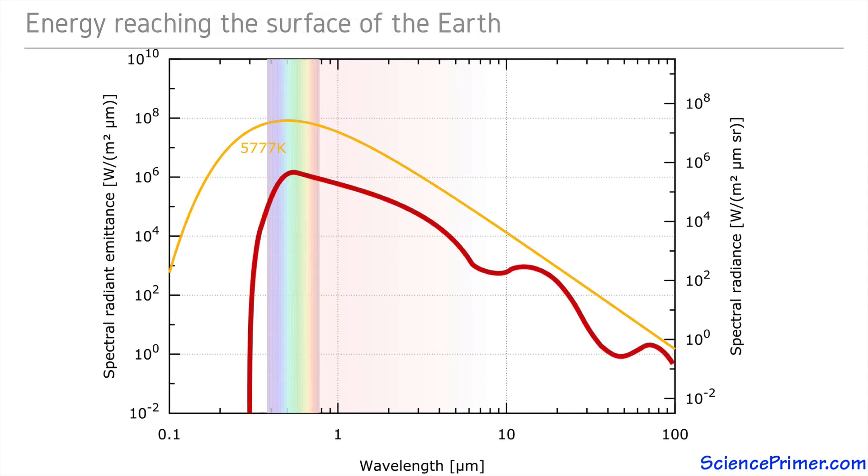The profile of the wavelengths of energy that reach the surface of the Earth looks different. Specifically, no radiation with a wavelength of less than about 300 nanometers reaches the surface.